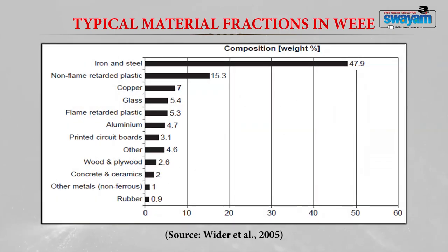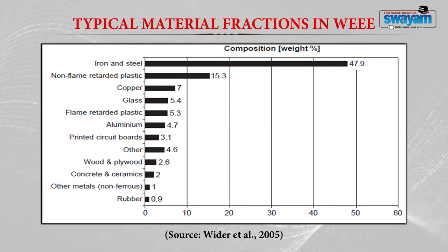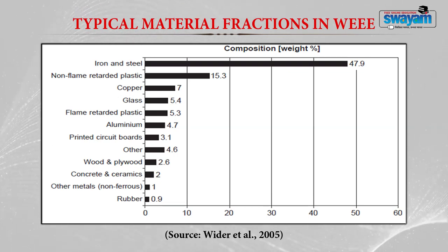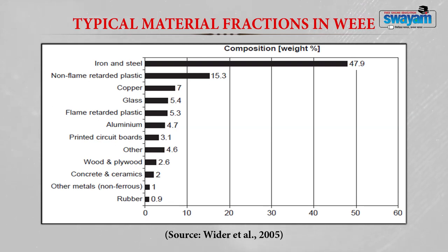This figure shows the typical material fractions in waste electrical and electronic equipment by weight. Iron and steel occupies 47.9%, plastic 15.3%, copper 7%, glass 5.4%, flame-retarded plastic 5.3%, aluminium 4.7%, printed circuit boards 3.1%, wood/plywood 2.6%, concrete and ceramics 2%, other non-ferrous metals 1%, and rubber 0.9%.